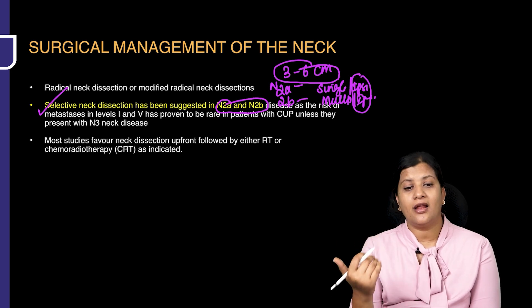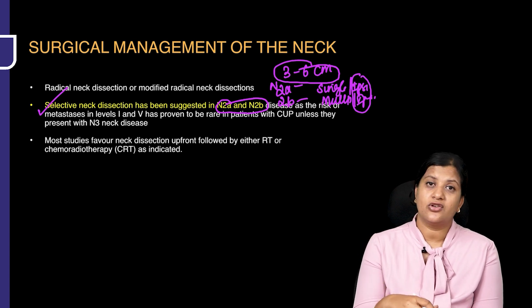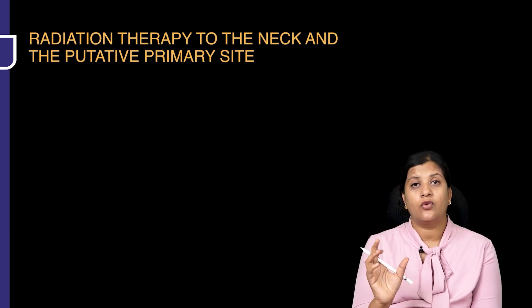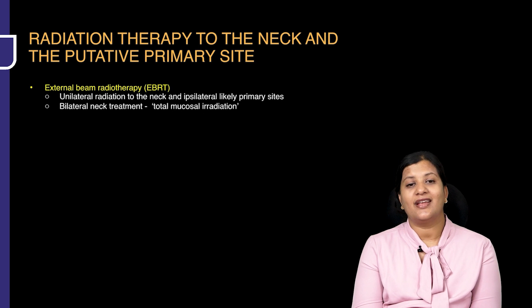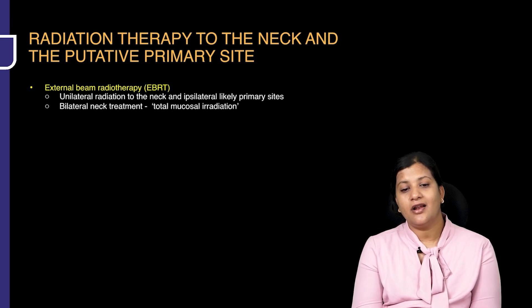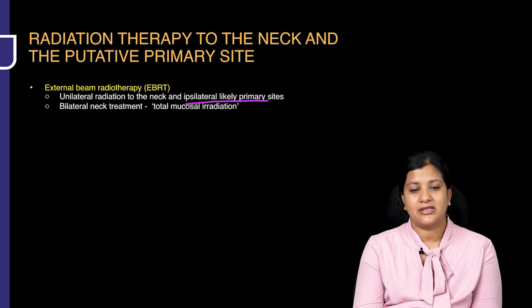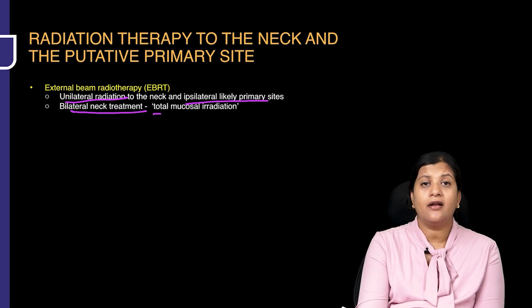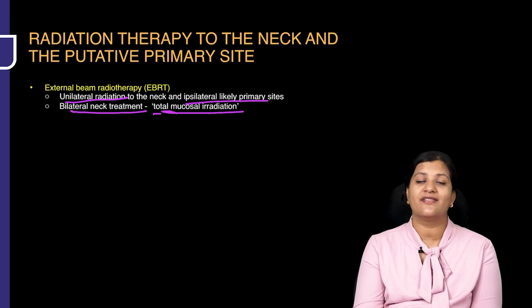Most studies favor neck dissection upfront followed by either radiotherapy or chemo-radiation as indicated — that applies to N2a and N2b. For radiation therapy to the neck and putative primary site, external beam radiotherapy can be given. For unilateral disease with an ipsilateral suspected primary site, unilateral radiation is used; bilateral neck disease requires total mucosal radiation.